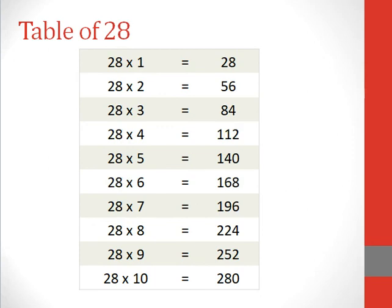Table of 28. 28 1s are 28, 28 2s are 56, 28 3s are 84, 28 4s are 112, 28 5s are 140.